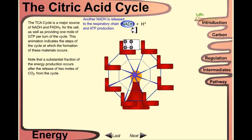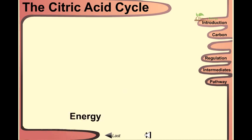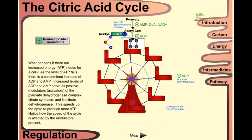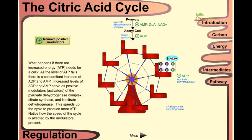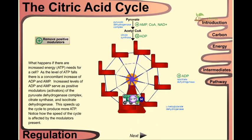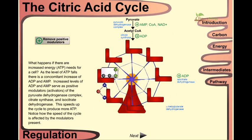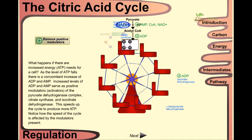Through the process of oxidative phosphorylation, it will produce ATP. Now let us talk about the regulation of energy. What happens if there are increased energy needs for the cell? As the level of ATP falls, there is a concomitant increase of ADP and AMP.